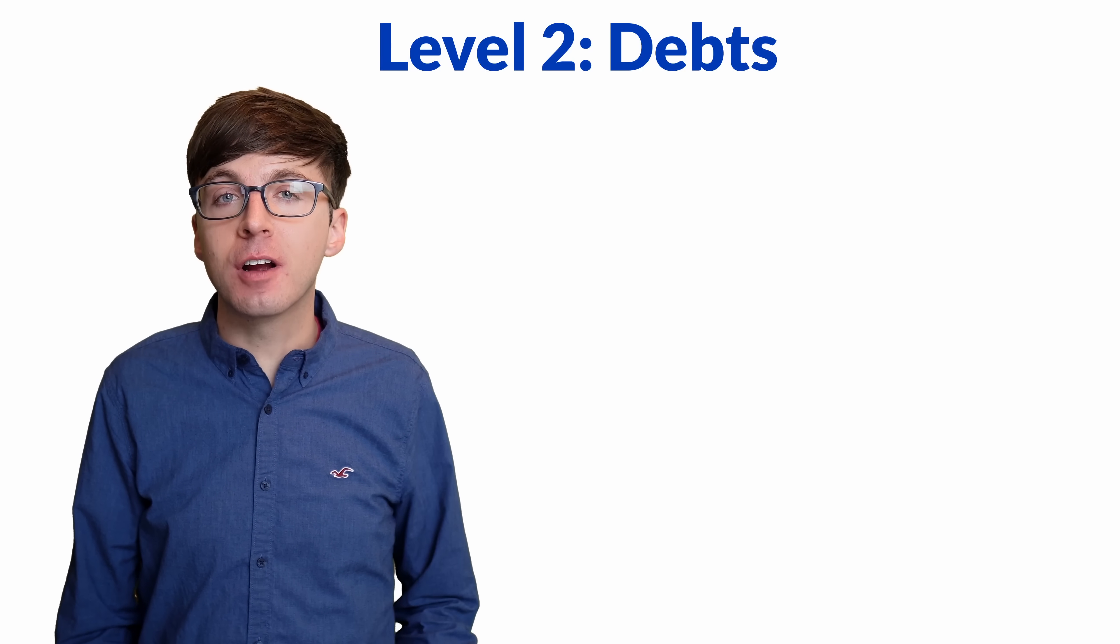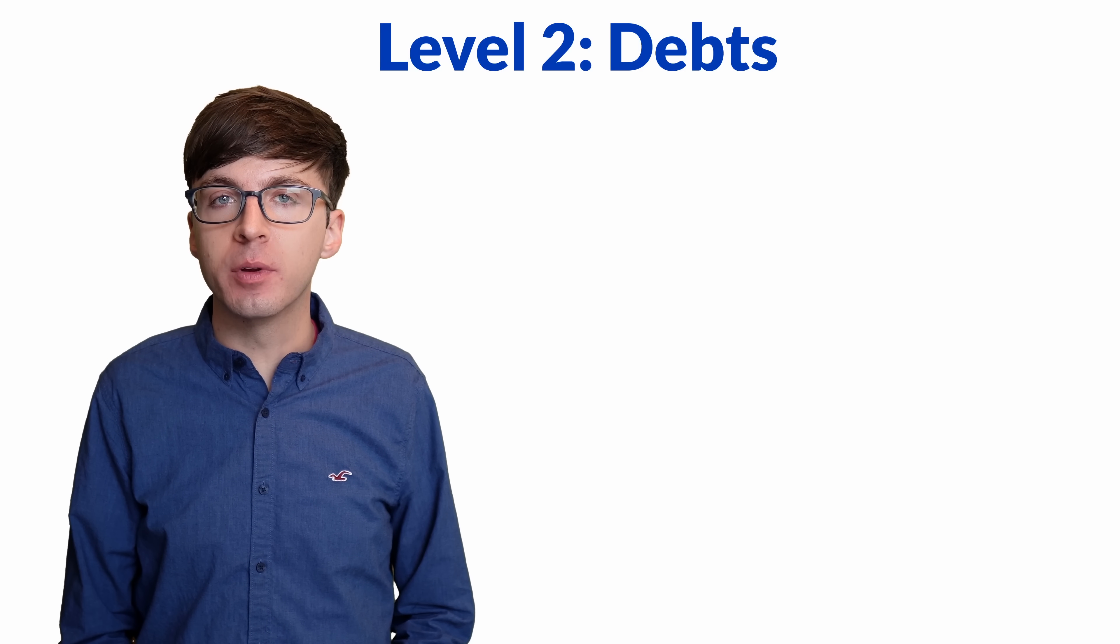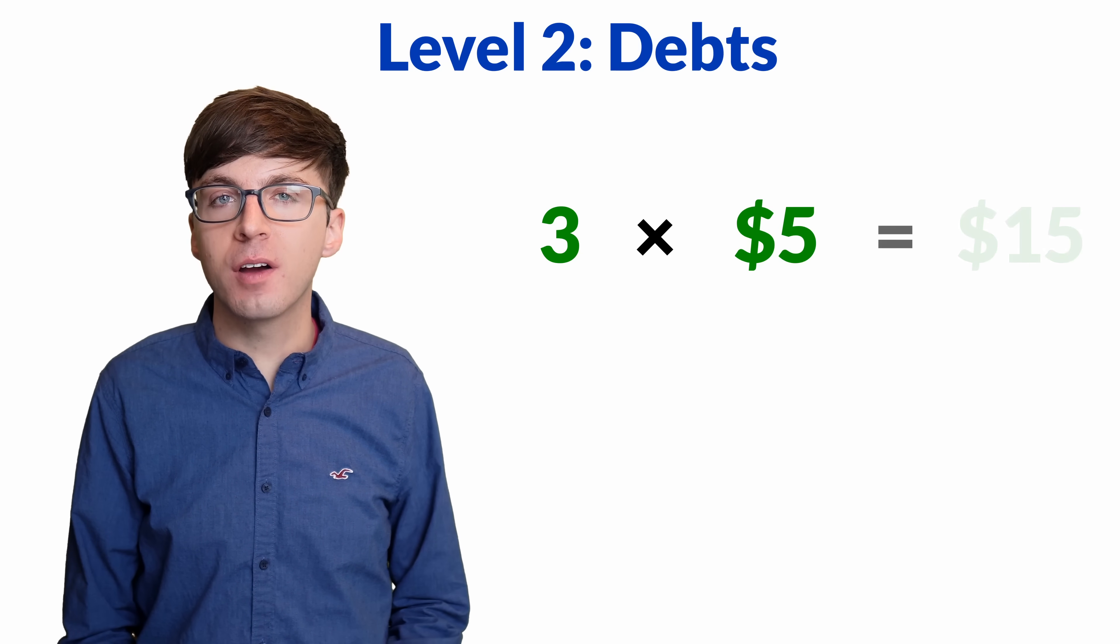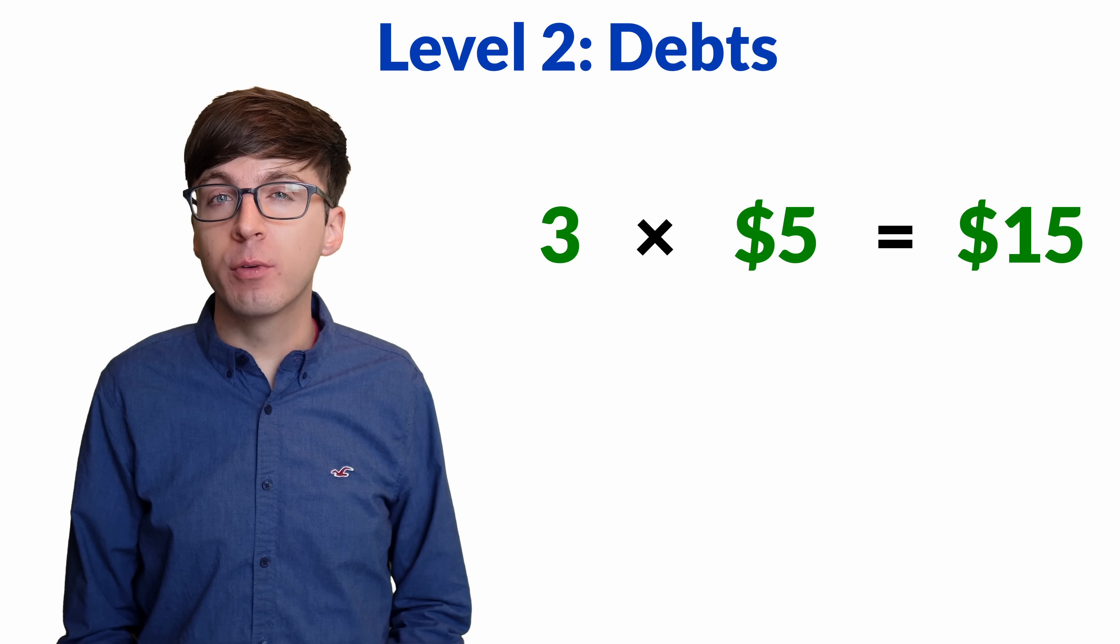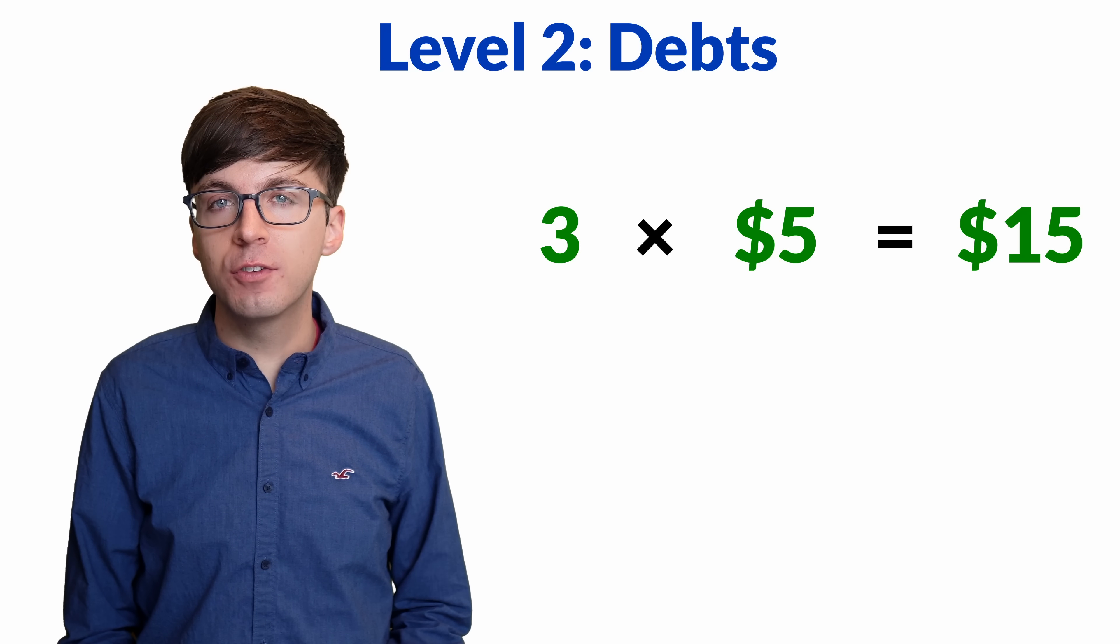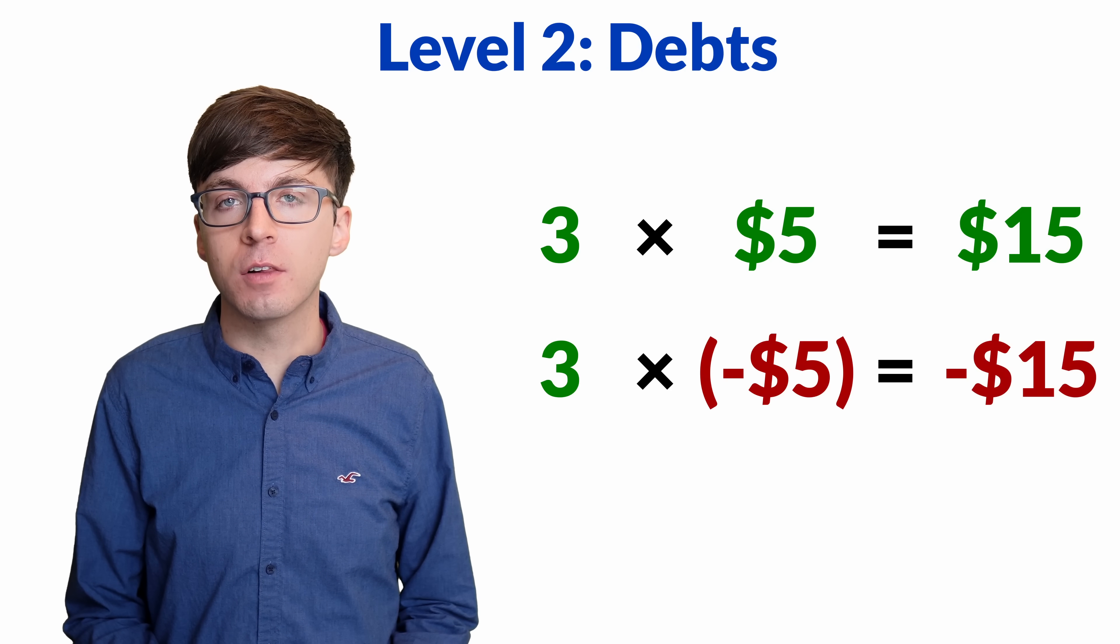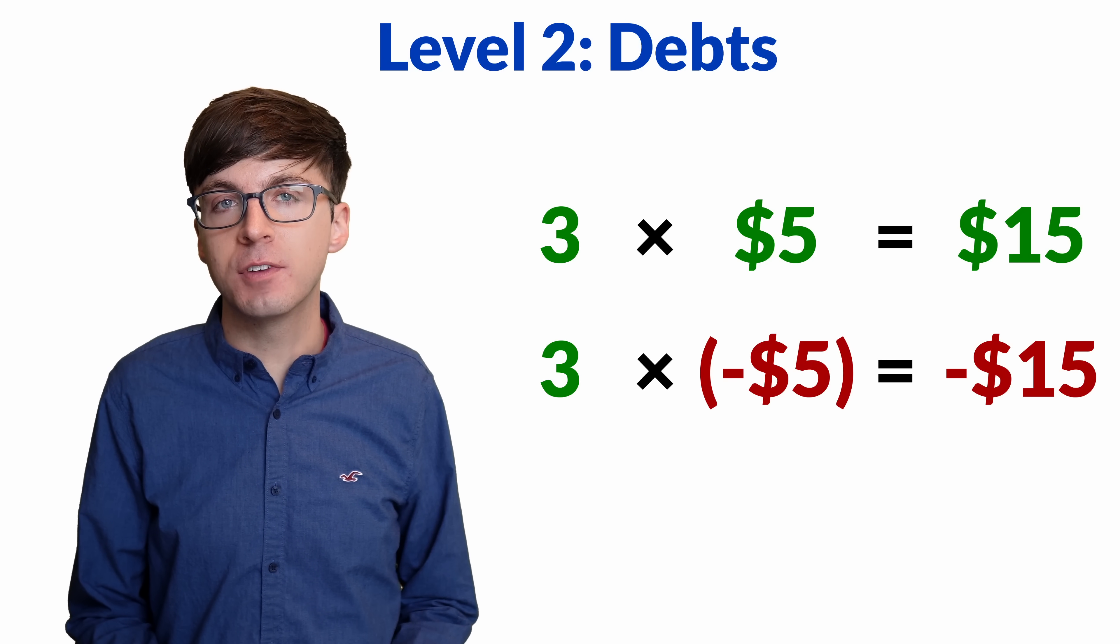For level two, let's consider another intuitive argument. If your friend gives you three $5 bills, that's positive 3 times positive 5, which is positive $15 for you. If your friend instead gives you three of their debts of $5 each, that's positive 3 times negative 5, which means you've lost $15. So positive 3 times negative 5 is negative 15.